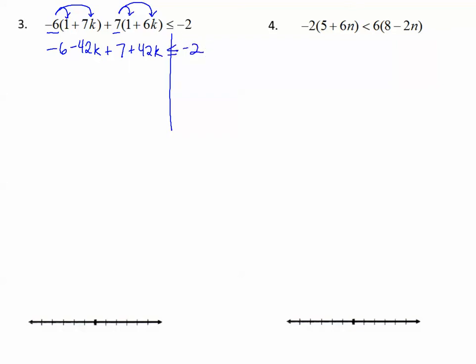Now we can combine like terms. These constants are like each other. Negative 6 and positive 7, when I combine them, make 1. And these k's are like each other. Negative 42k and positive 42k make no k's. That's using the inverse property of addition. The k's are all gone. And then I have less than or equal to negative 2.